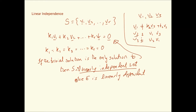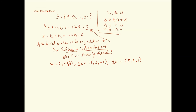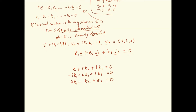Let's look at some examples. We have three vectors v1, v2, and v3, and we want to check if these are linearly independent or linearly dependent vectors in R3. We set up the equation k1·v1 + k2·v2 + k3·v3 = 0 vector, which gives us a system of equations and then this coefficient matrix A.